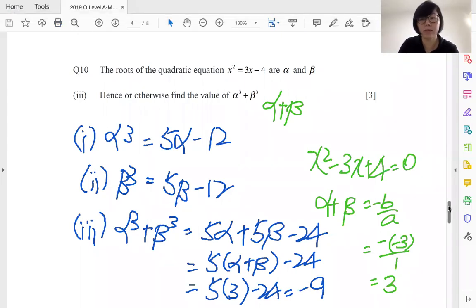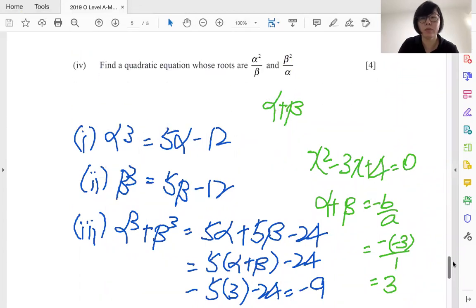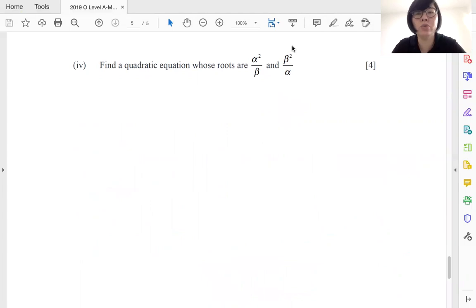Now let us move on to the last part of this question, which is four marks. Find a quadratic equation whose roots are. All right, now to find a quadratic equation you've got to understand that we need two things about roots: the sum of the two roots as well as the product of the two roots. So we're going to start working on that to find the sum and product, and it doesn't matter how complicated the roots look like, eventually it will work out.